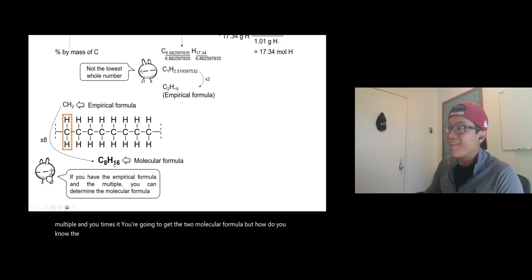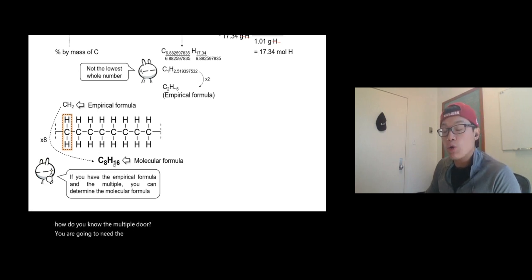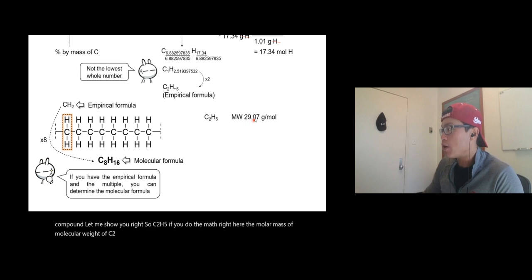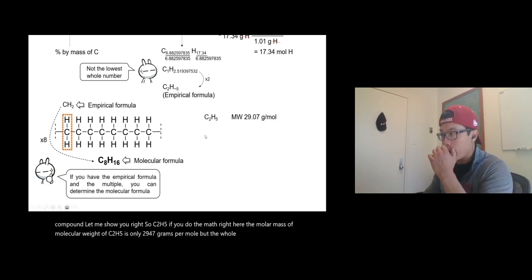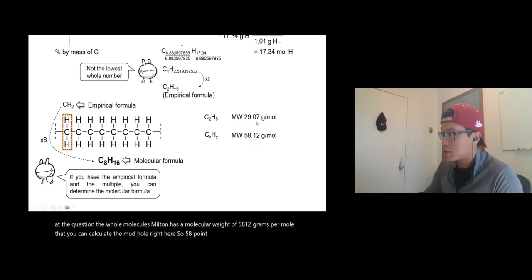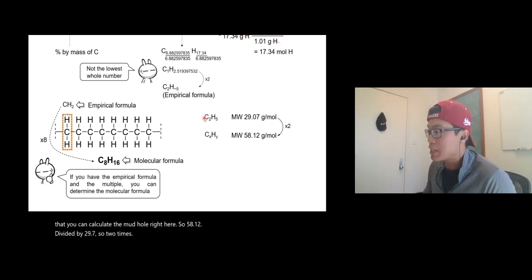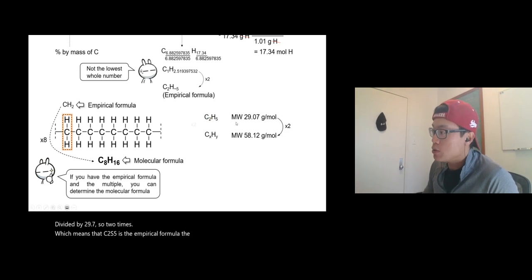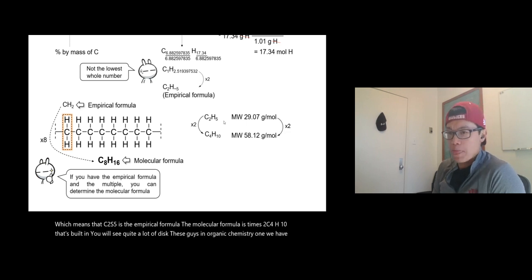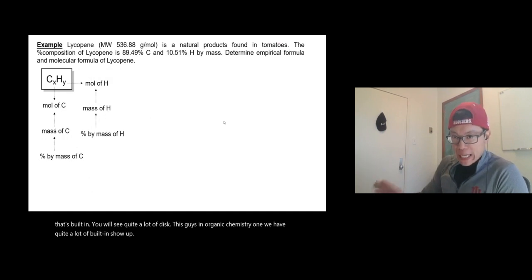To convert empirical formula to molecular formula, you need the multiple. Calculate the molar mass of the empirical formula C₂H₅, which is 29.07 g/mol. The whole molecule, butane, has a molar mass of 58.12 g/mol. Divide 58.12 by 29.07 — the multiple is 2. So the molecular formula is C₂H₅ times 2, which gives C₄H₁₀. That's butane — you'll see it a lot in organic chemistry.